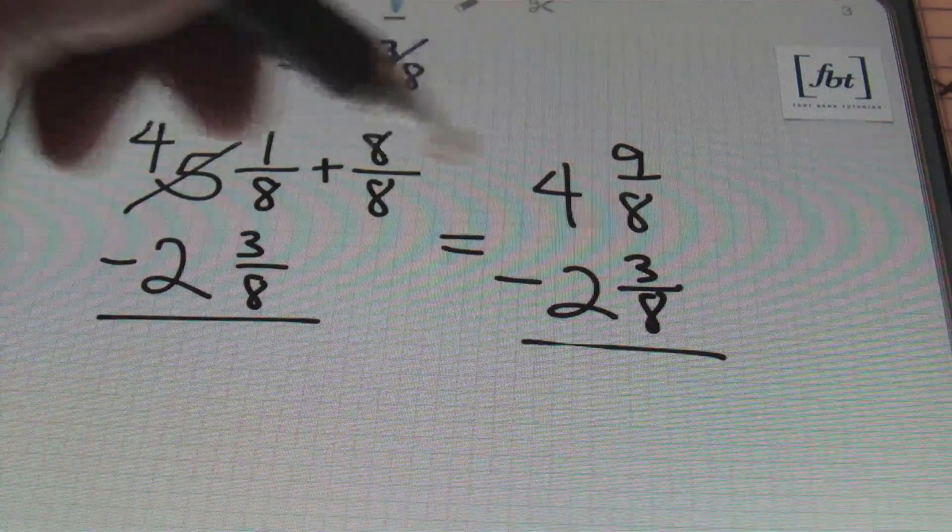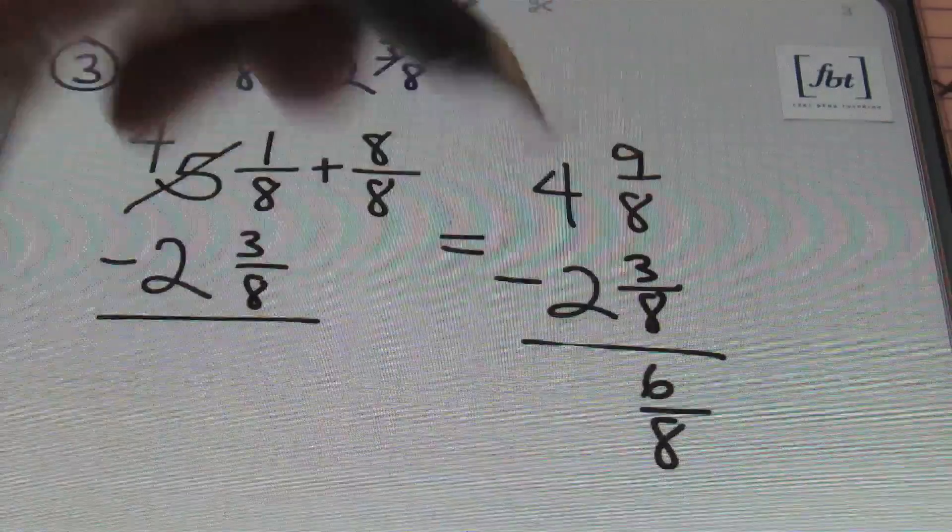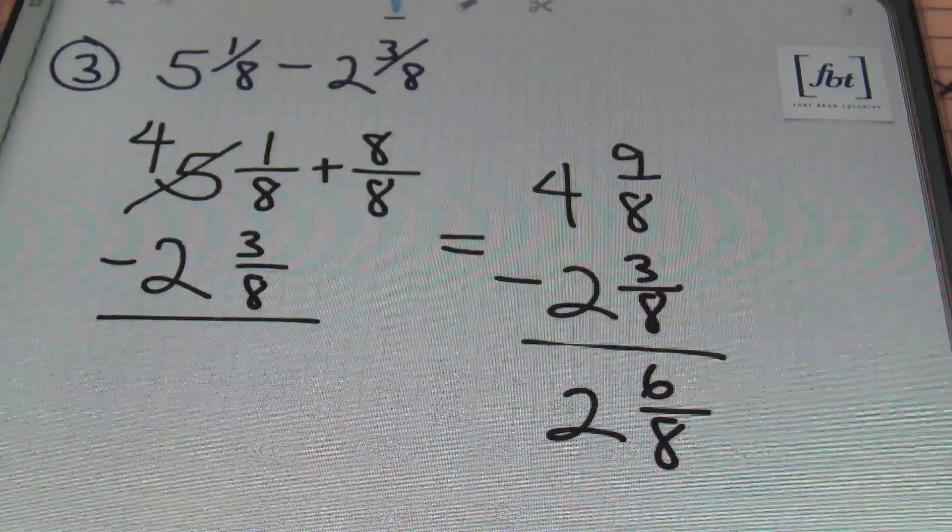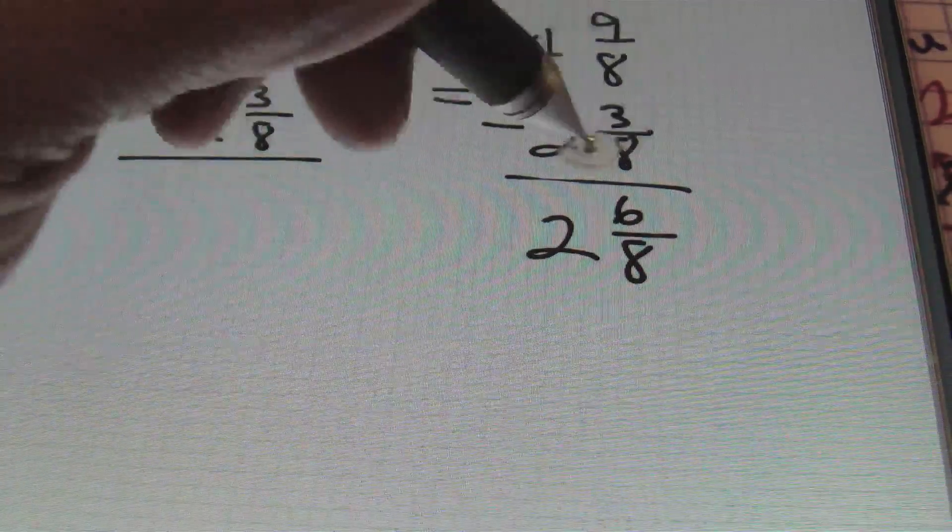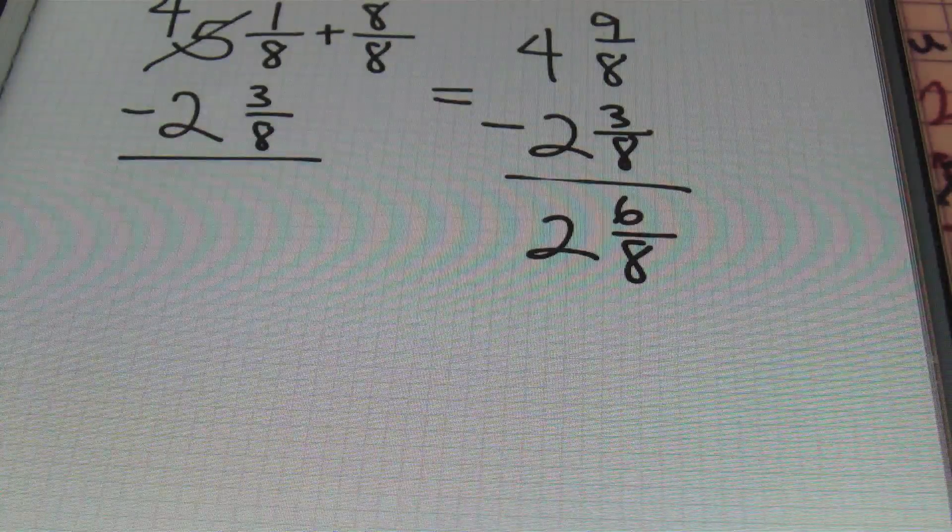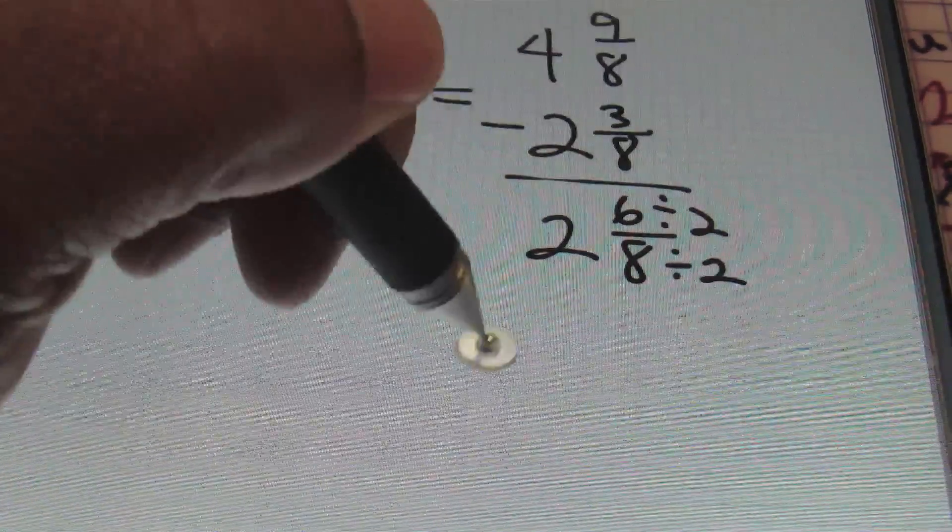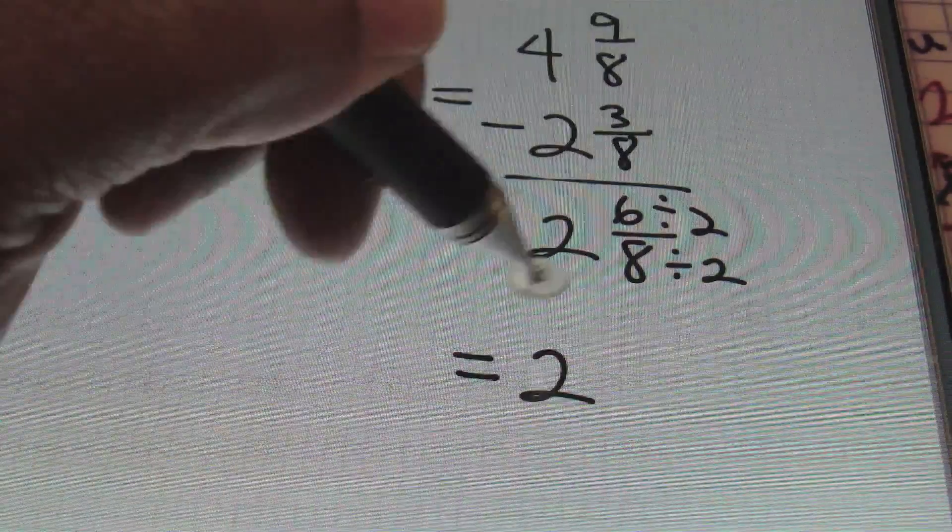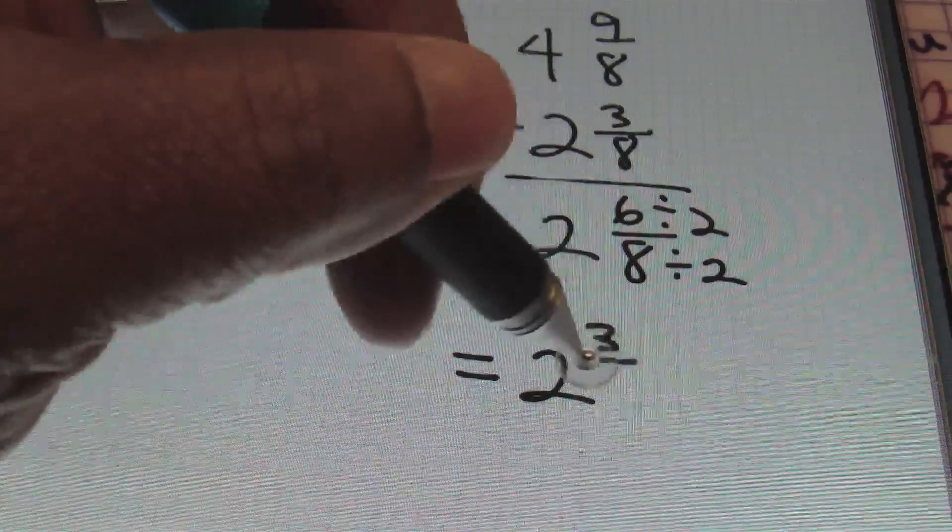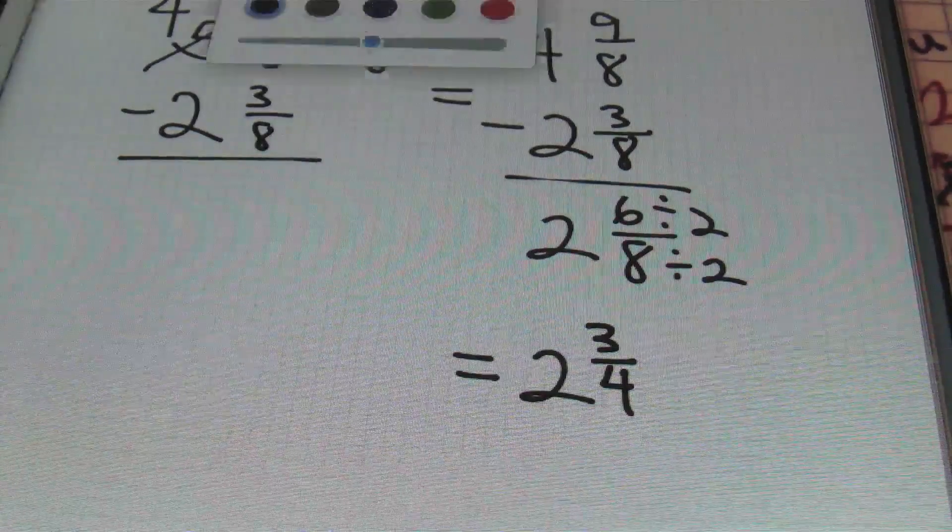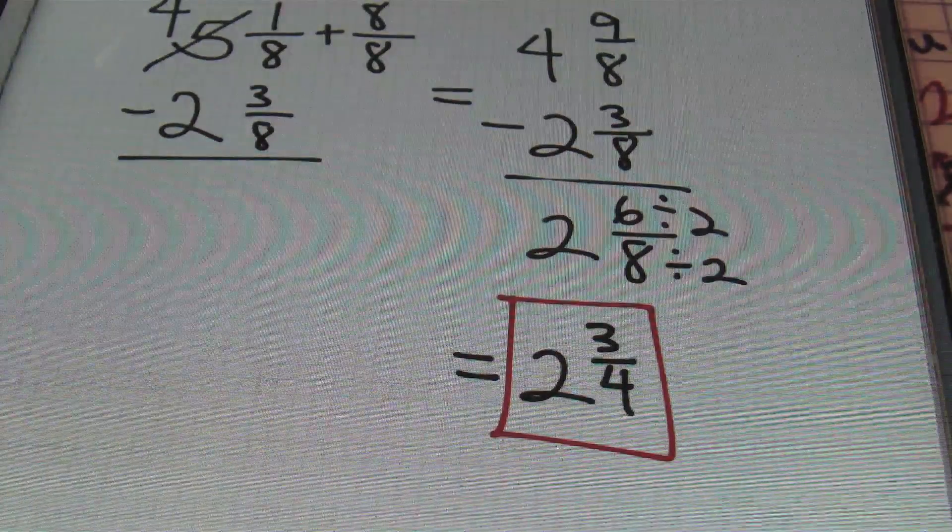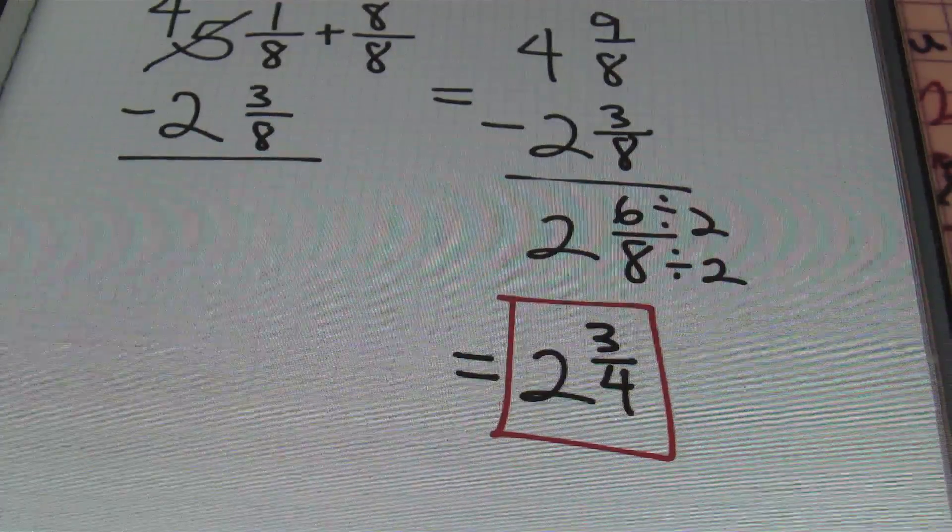So 9 minus 3 is 6 over that common denominator of 8. 4 minus 2 is 2. And then I'm going to simplify because the 6 and 8 can both be reduced by 2. So showing that I'm doing that, ladies and gentlemen, it's going to look just like this here. I have now 2 and 6 divided by 2 is 3 and 8 divided by 2 is 4. And that gives me my final result, ladies and gentlemen. Done and done. Just like that. That's problem number 3.